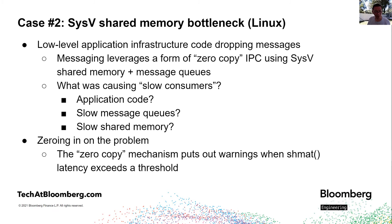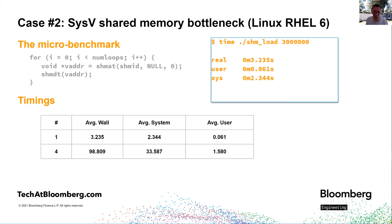Our second case occurred on Linux. We were getting tickets reporting dropped messages from low-level application infrastructure. This infrastructure leverages a combination of System V message queues and shared memory to implement a form of zero-copy messaging. The problem was relatively easy to identify because the infrastructure reports when shmat latency exceeds a certain threshold, and we were able to easily correlate large shmat latencies with message drops. We suspected contention again.